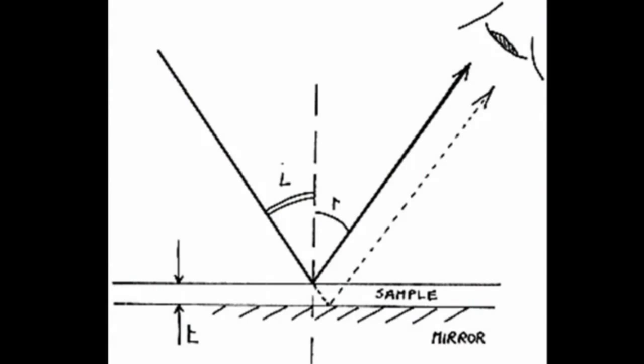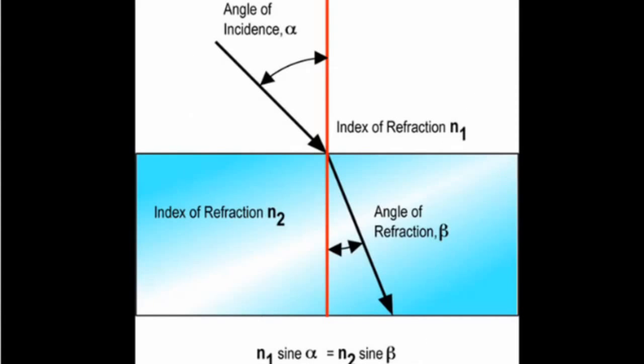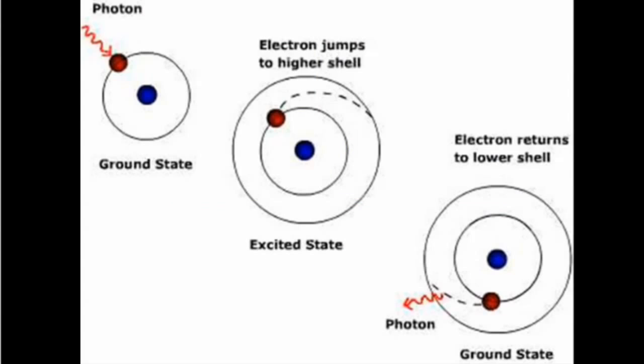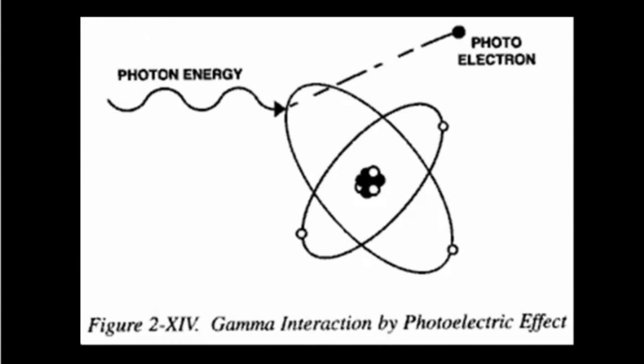When light interacts with matter, a couple different things can happen. You can have reflection, where the light bounces off completely. You can have refraction, where the light enters the material and passes through it. Or you can have a combination of the two. You can also have absorption, where the light energy from a light particle or photon is absorbed and converted to another form of energy.